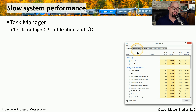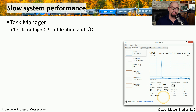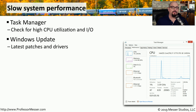You can also choose the Performance tab to get a graphical view of what may be happening, so you can see over time how CPU, memory, disk, and other resources have been reacting to the requirements of the system. If you think your problem may be related to applications or software on your computer, you may want to run a Windows update, which will update all of your applications and drivers to the latest version.